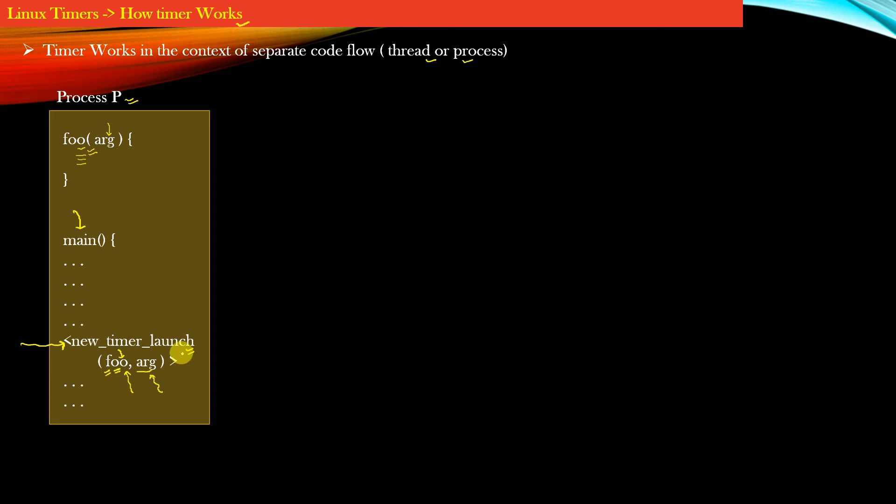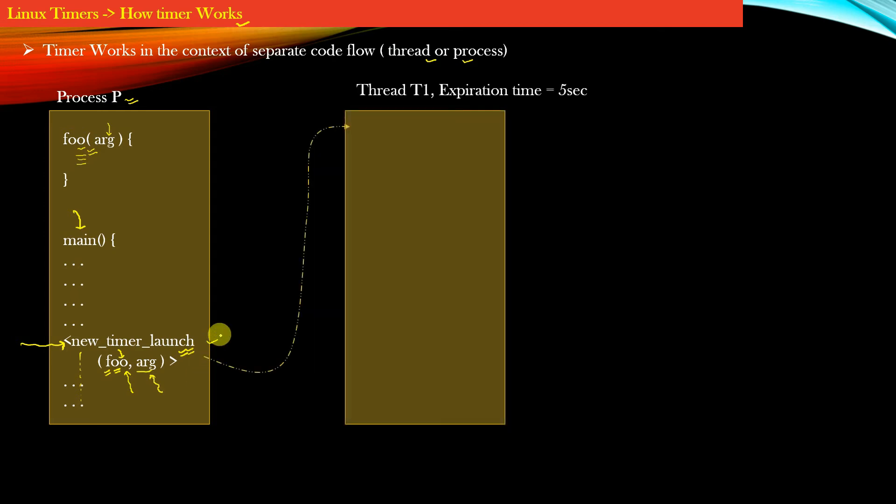So as soon as this API is invoked, your process P would continue to execute the subsequent lines of code, whereas your operating system will fork out a new thread at this line of code. And it will create a separate code flow in the form of a new thread T1. So this block represents a new thread T1 altogether which is created by the parent process P.